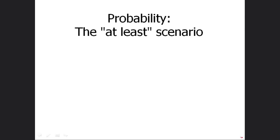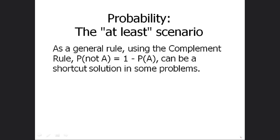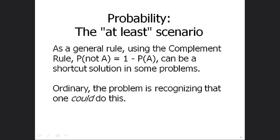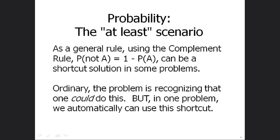Now we're going to talk about an incredible time-saving shortcut. As a general rule, the complement rule can sometimes be used as a shortcut in some problems. Ordinarily, the hard thing about using it as a shortcut is recognizing that one could do this — reading the problem and having the insight that maybe it would be easier to calculate the probability that something doesn't happen and then subtract that from one. Once you recognize that, the complement rule will save you time, but you have to have that recognition. I'm going to show you one case where that recognition will not be a problem — there will be an automatic clue and 100% of the time you'll know you can use the complement rule as a shortcut.